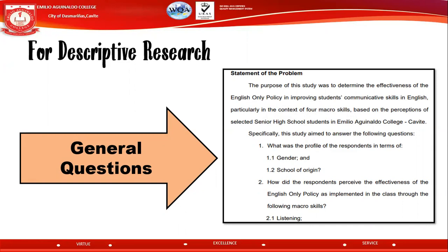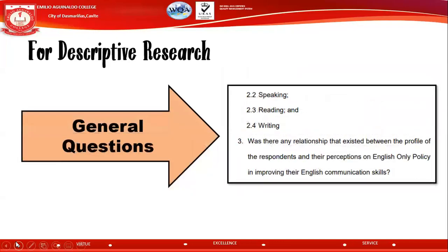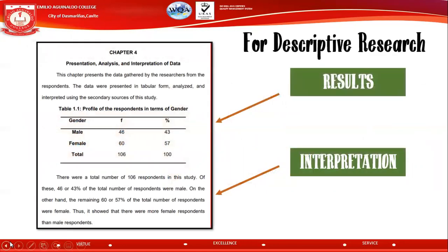The introductory part introduces the objective of your research — the three general questions. This example may be a mix of descriptive and correlational research, but the approach is essentially the same. For descriptive research, you have your results — as discussed previously, you must first state the result or present the table.